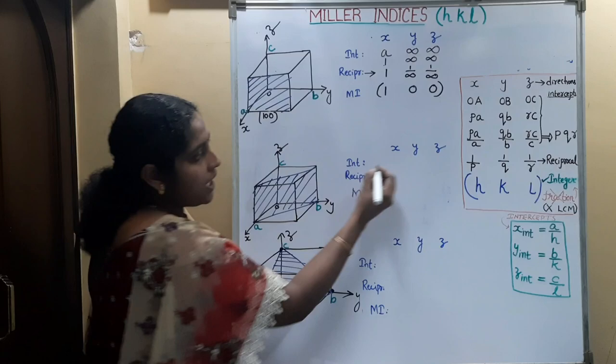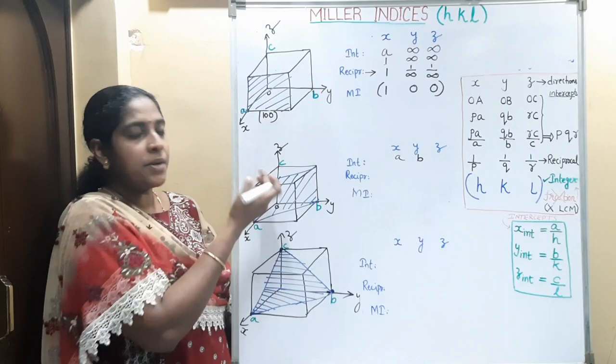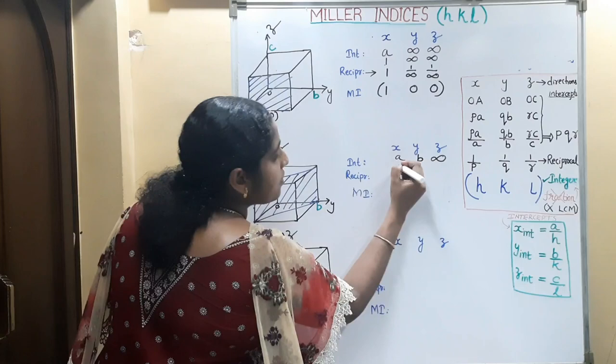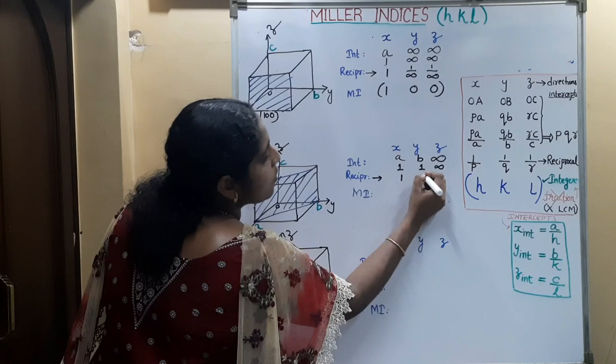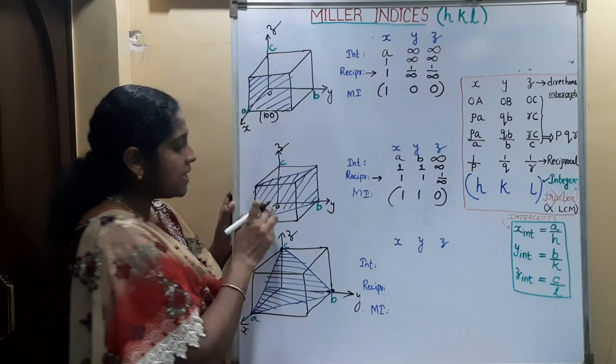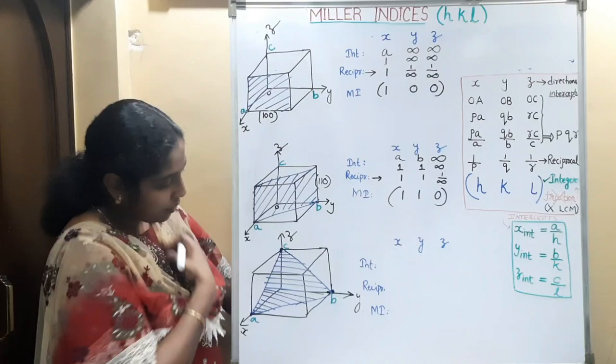For the second lattice plane: it has an x-intercept of A and y-intercept of B, but no z-intercept, so the z-intercept is infinity. The coefficients are 1, 1, ∞. Taking the reciprocal gives 1, 1, 1/∞ = 1, 1, 0. The Miller indices of this crystal plane are (1, 1, 0).